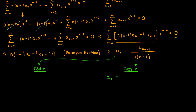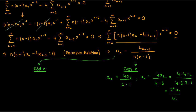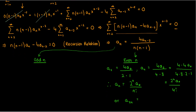Starting with the even branch: a₂ equals 4a₀ over 2·1; a₄ equals 4a₂ over 4·3, and substituting in a₂ gives a₄ equals 4²·a₀ over 4·3·2·1, which is 4²·a₀ over 4 factorial, or 2⁴·a₀ over 4 factorial. Following this pattern, the nth term is 2^n·a₀ over n factorial. Since n is even we can write a_(2k) equals 2^(2k)·a₀ over (2k)! where k is greater than or equal to 1, since any even number can be written as 2k.